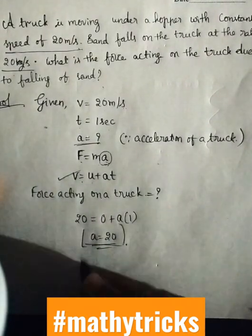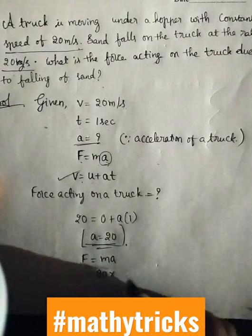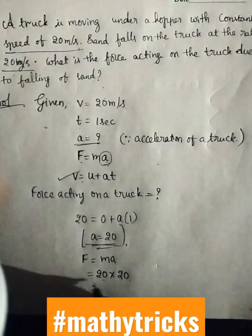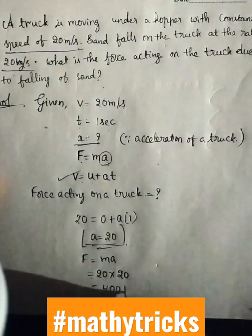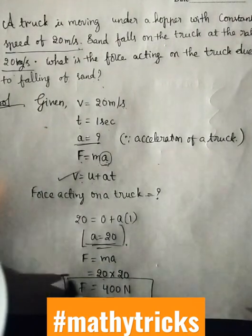Let us substitute the a value in the formula F = ma. Mass is 20 and acceleration is also 20. 20 into 20, 400. Force is in Newtons, so F = 400 Newtons.